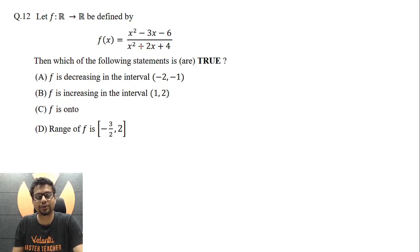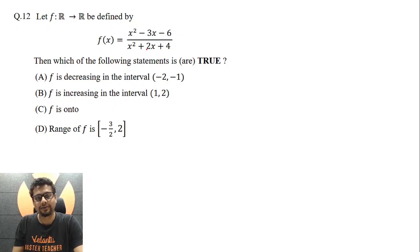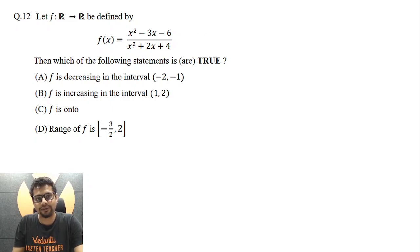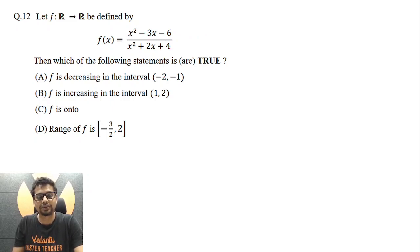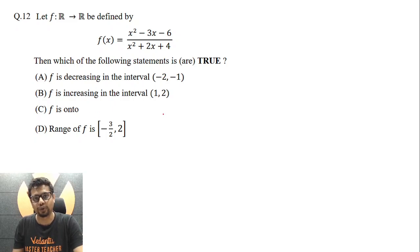In fact, it is not even tending to zero for any value of x, because the denominator is a quadratic with negative discriminant. So you may write f(x) as x squared minus 3x minus 6 divided by (x plus 1) squared plus 3. There is no value of x for which f(x) will tend to infinity or minus infinity, so that means f is definitely not onto.